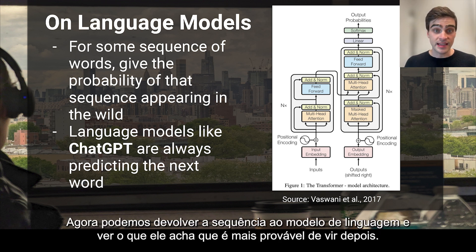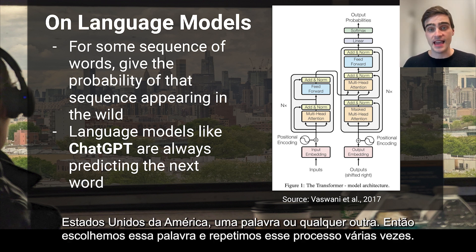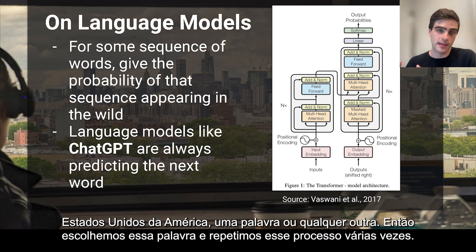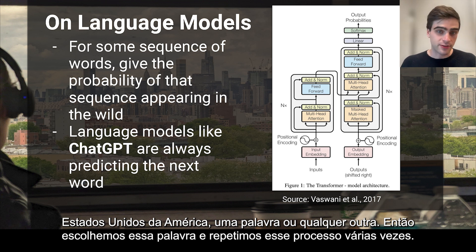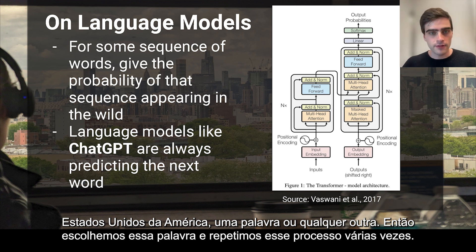Now we can give the language model the string back and see what it thinks is most likely to follow — 'United States of America is,' or 'the,' or whatever word. And so we pick that word. And we repeat this process over and over and over again.